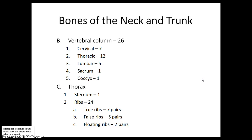Welcome back to the second part of our axial skeleton tour. Last time we finished off with the skull, the hyoid, and the auditory ossicles. Now we're going to take a look at the vertebral column, the ribs, and sternum — 24 ribs, 26 vertebrae, and 1 sternum.